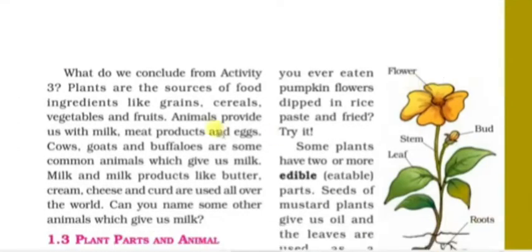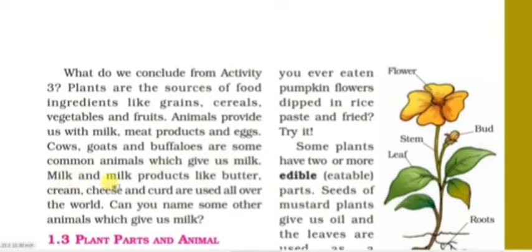What do we conclude from Activity 3? Plants are the sources of food ingredients like grains, cereals, vegetables, and fruits. Animals provide us with milk, meat products, and eggs. Cows, goats, and buffaloes are some common animals which give us milk. Milk products like butter, cream, cheese, and curd are used all over the world.